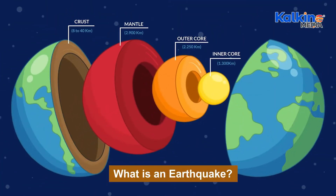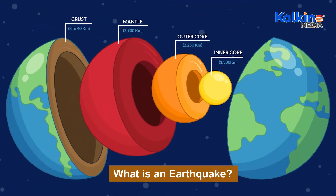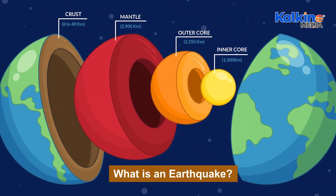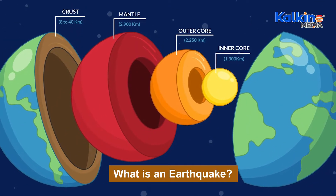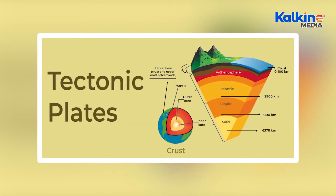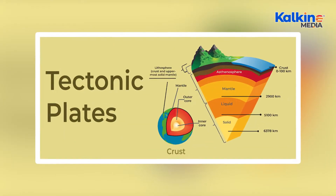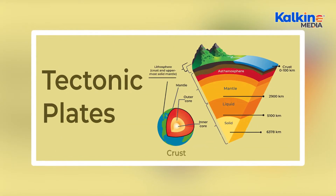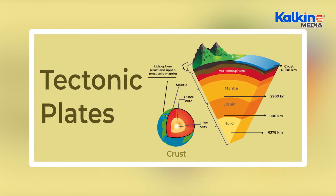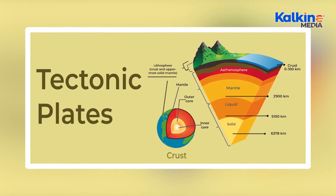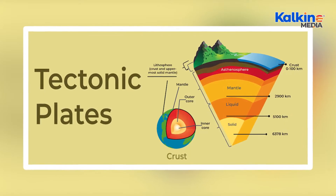The earth consists of four main layers: the inner core, outer core, mantle, and crust. The topmost crust floats on the semi-solid mantle and is broken into large sections called tectonic plates, which are constantly in motion.